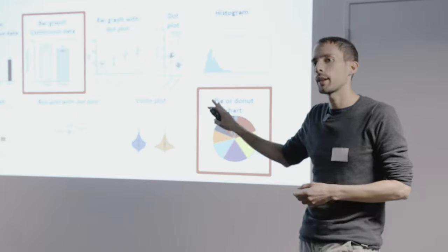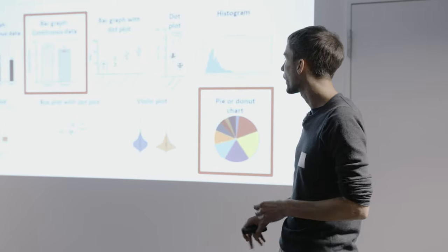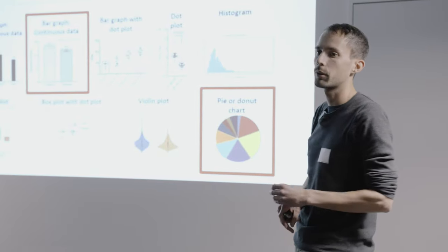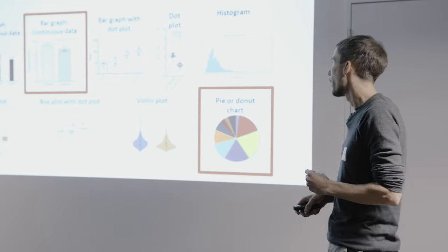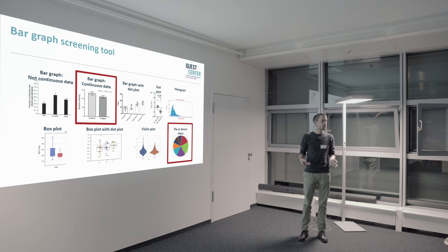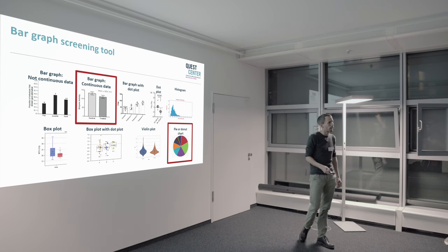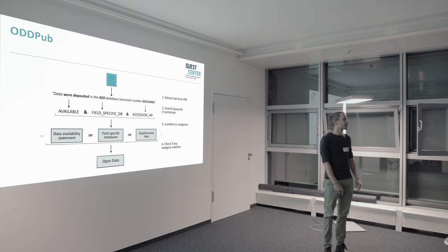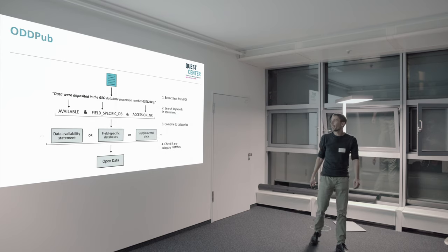Just one sentence on the technical side: behind the tool is a deep neural network that looks at pages of publications and detects if any of these visualization categories are present.